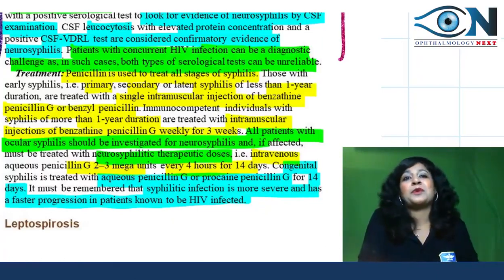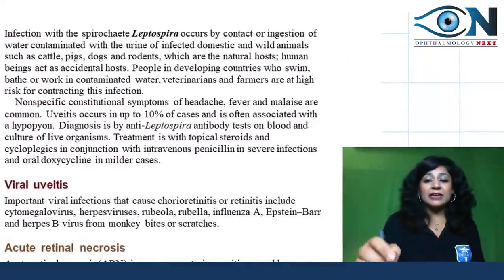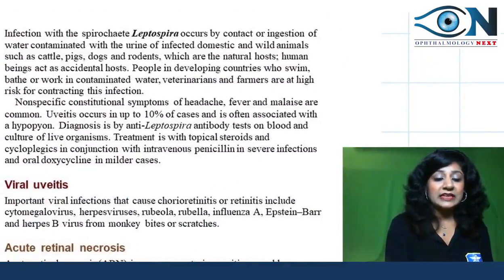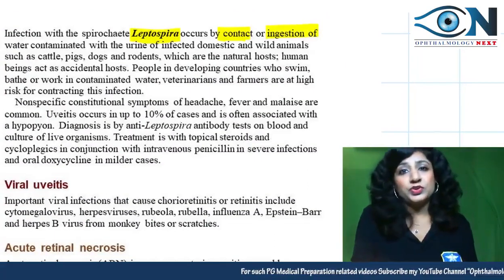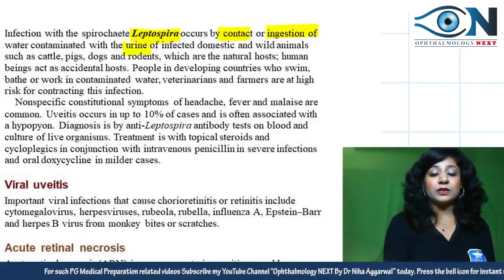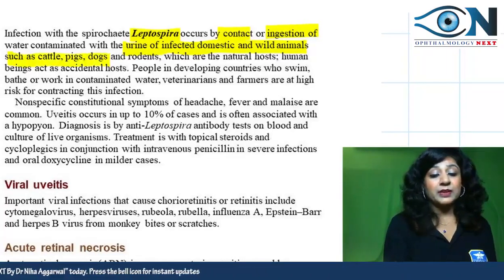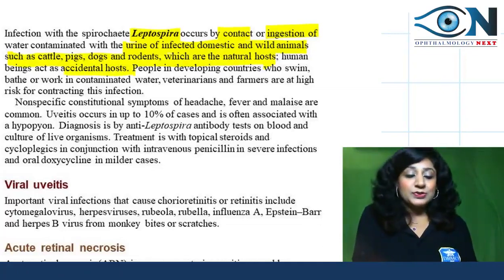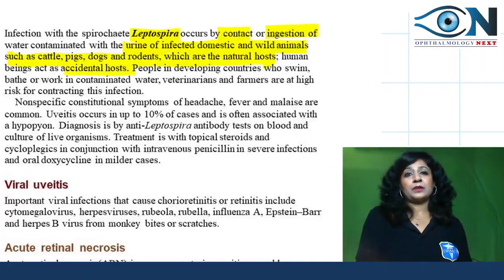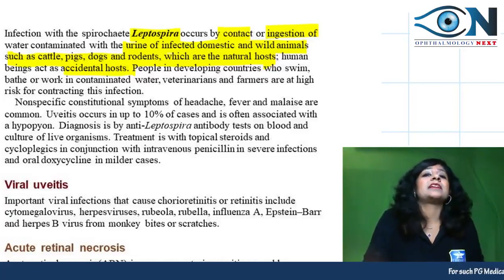Moving to leptospirosis — infection with the spirochete Leptospira occurs either by contact or by waterborne ingestion of water contaminated with the urine of infected domestic and wild animals such as cats, pigs, dogs, and rodents, which are the natural hosts. Humans are just accidental hosts.